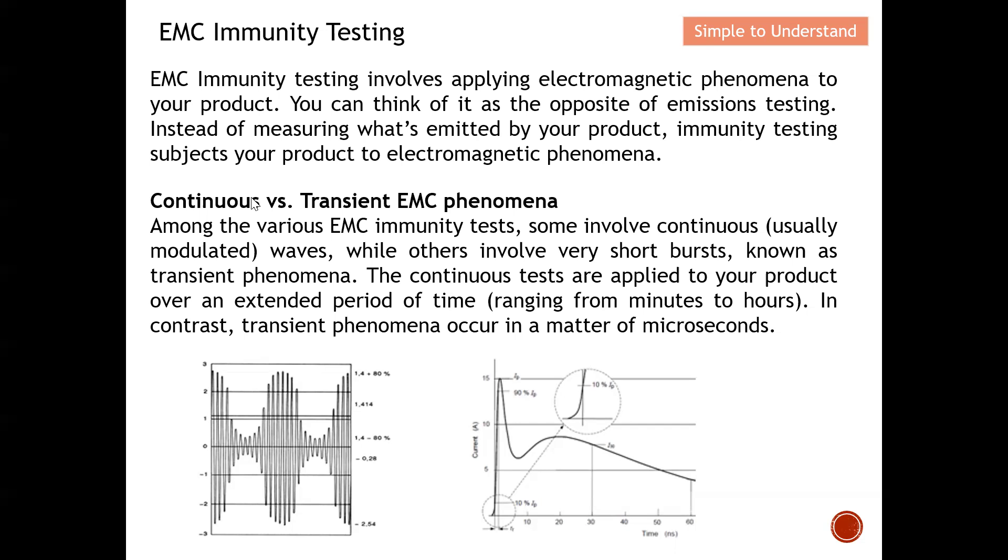Under immunity testing, we have continuous and transient EMC phenomena. Among the various EMC immunity tests, some involve continuous modulated waves, while others involve very short bursts known as transient phenomena. The continuous tests are applied to your product over an extended period ranging from minutes to hours. In contrast, transients occur in a matter of microseconds.